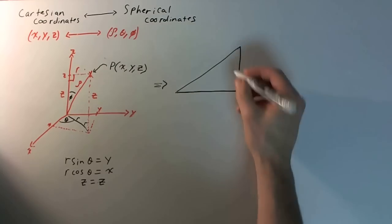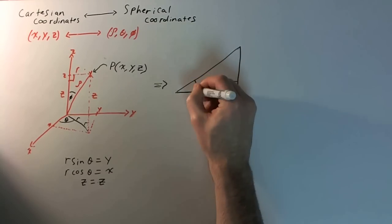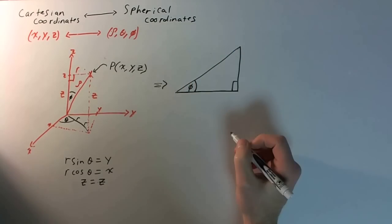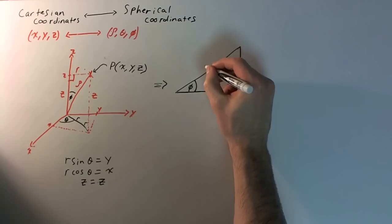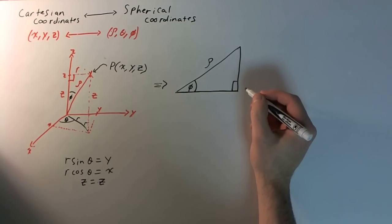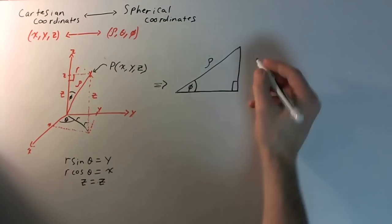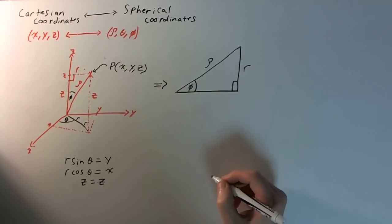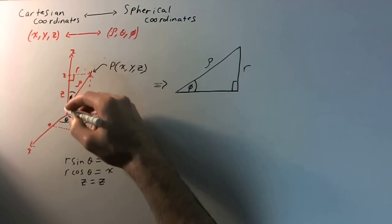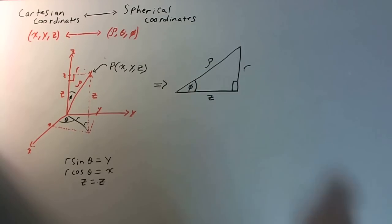So I'm just going to flip this around here. All right, right triangle. Now, in this case, this is the angle phi. This is rho. And the height for this triangle is r, the same r in polar coordinates. And this, the x on the bottom here, what would normally be x, is z.